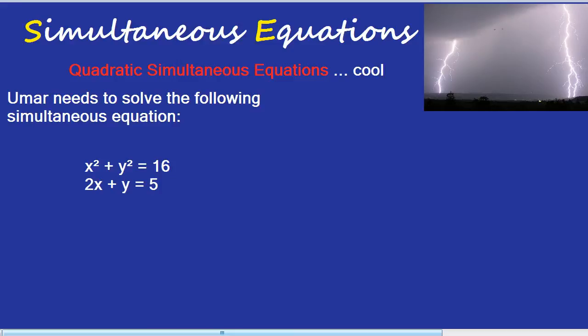Now here is a really fun simultaneous equation. That's when it gets quadratic. Quadratic means squares are getting involved. So this is a simultaneous equation. It will be about six or seven marks in the exam. And let's have a go at solving it. Umar needs to solve the following simultaneous equation. How will he do it?